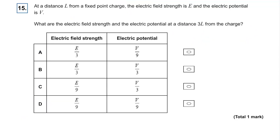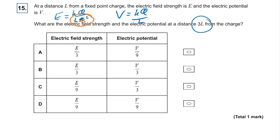Question fifteen: at distance L the electric field strength is V. Field strength equals KQ over L². If L triples, the denominator goes up by nine, so field strength goes down by a factor of nine — can't be A or B. Potential equals KQ over L; if L triples, potential goes down by a factor of three. The answer is C.